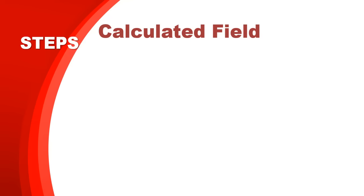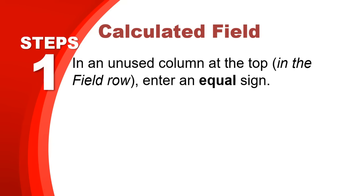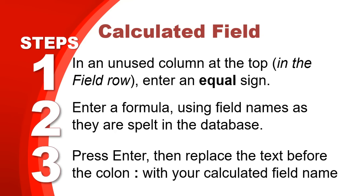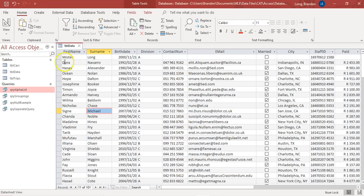To recap the three-step program for a calculated field: Step one — in the unused column at the top in the field row, enter an equal sign. Step two — enter your formula; if you're using field names spell them correctly, and if they have spaces put them in square brackets. Step three — press Enter, and text will appear with a colon; change that label text to whatever name you want at the top of the column.